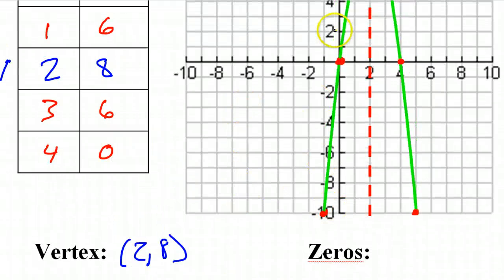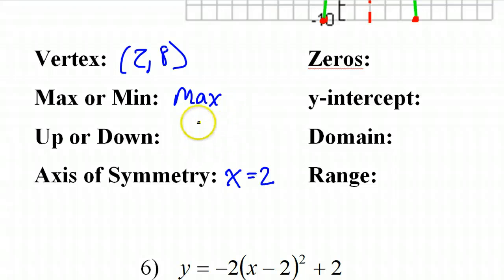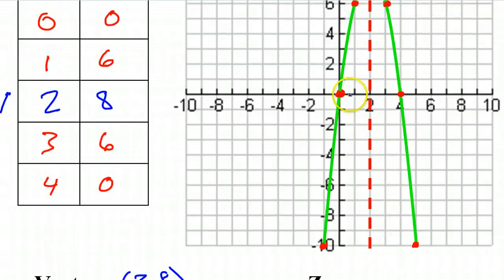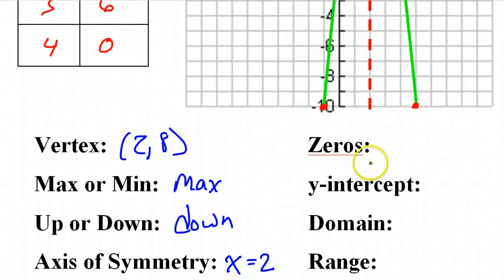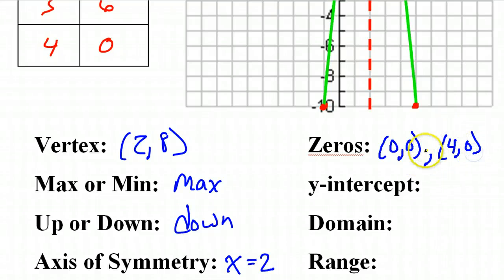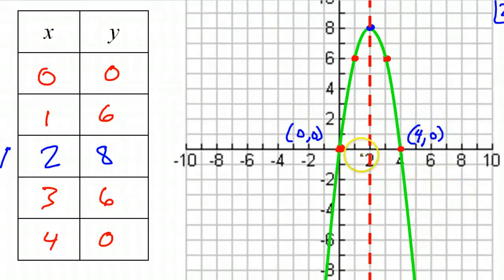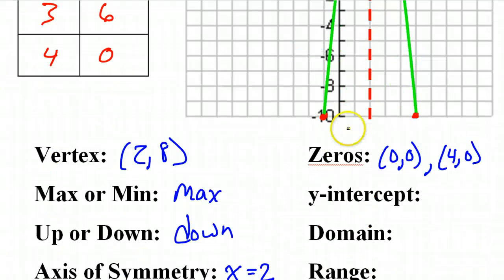The parabola is clearly facing downward. The zeros are the x-intercepts, so we've got one at (0, 0) and one at (4, 0). Now the y-intercept is where the graph touches the y-axis — this x-intercept is also happening to be the y-intercept. So this parabola touches both the x-axis and y-axis at (0, 0).